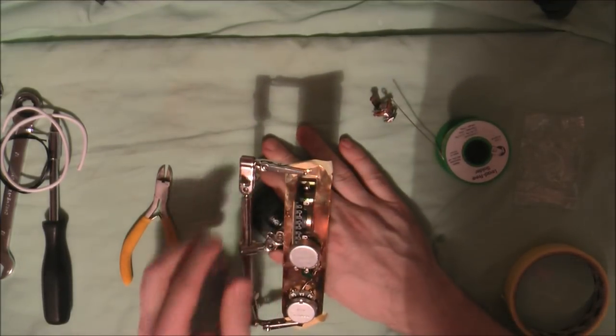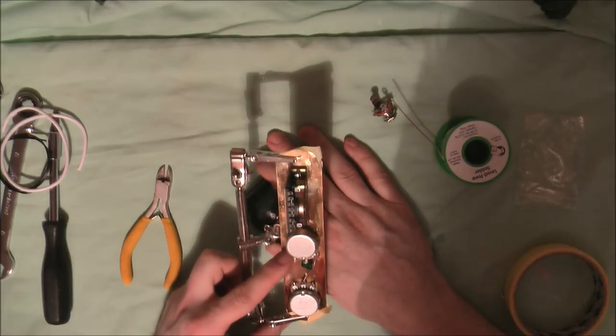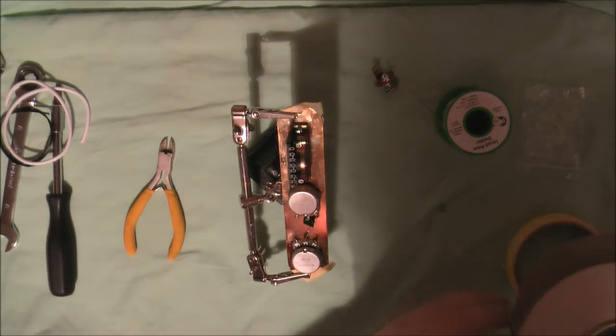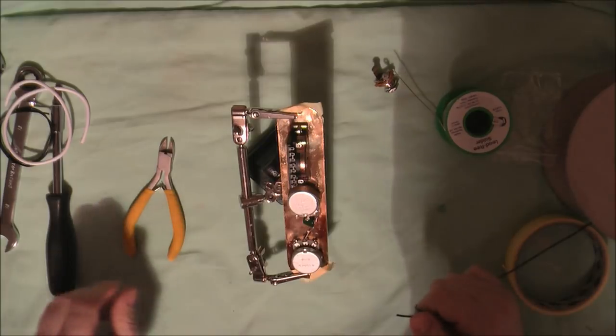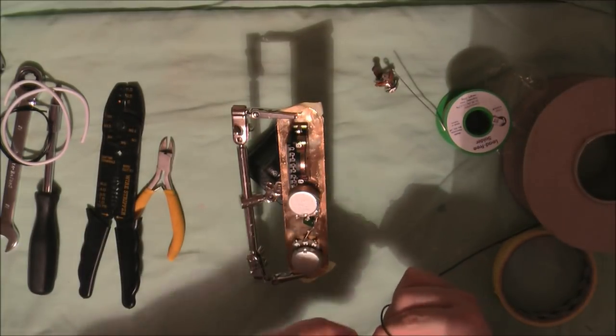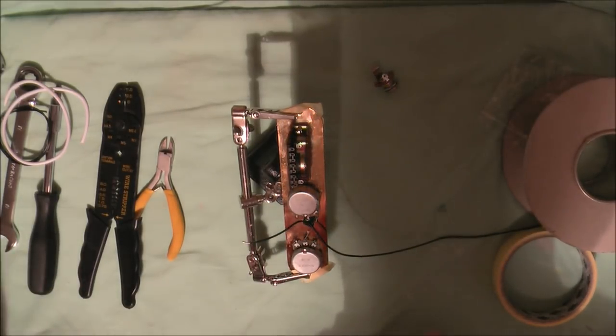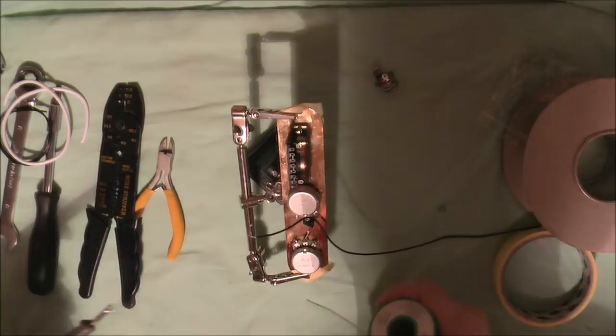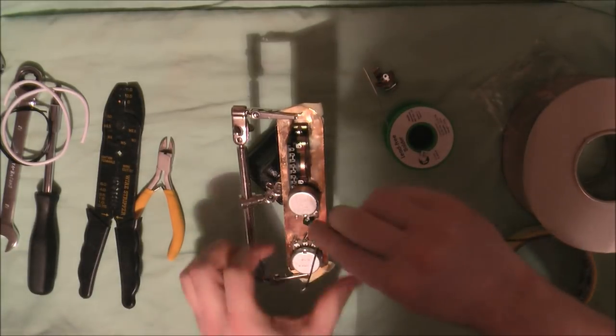Okay, the next thing we want to do is take a wire from the left hand side lug of the tone pot to the opposite lug on the volume pot as you can see there. So for this I'm just using some single core wire which we also sell on our website. It's 22 gauge so pretty standard stuff. I'm just going to strip a little bit of that back.